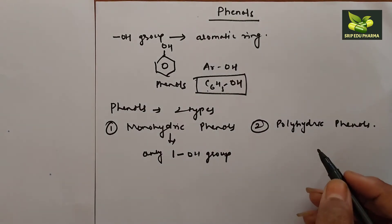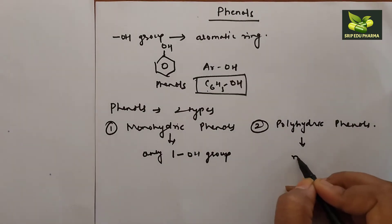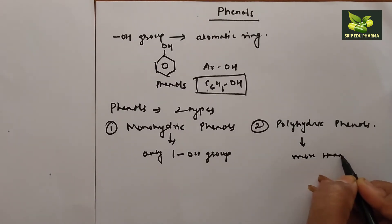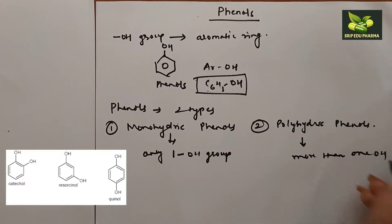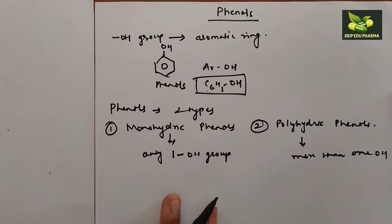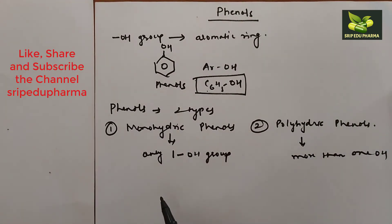What are polyhydric phenols? Yes, which contain more than one OH group, these are called polyhydric phenols. Let's discuss different examples of monohydric and polyhydric phenols.